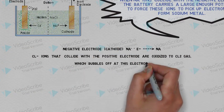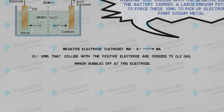In this equation, we see that chloride ions that collide with a positive electrode are oxidized to chlorine gas, which bubbles off the electrode.